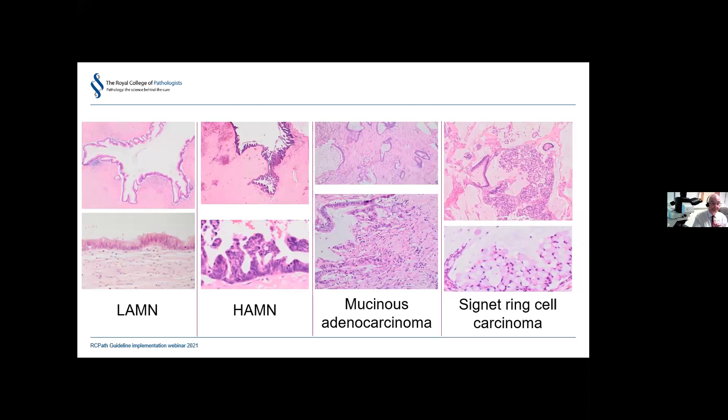Mucinous adenocarcinomas are defined by infiltrative invasion — the same type of invasion seen in colorectal carcinoma — with a desmoplastic reaction, angulated glands, and tumour budding. Signet ring cell lesions are designated separately. If more than 50% of cells are signet ring cells, you can call it signet ring cell carcinoma. If more than 10% are signet ring cells, mention this in the report; they will be classified G3 in the WHO classification.